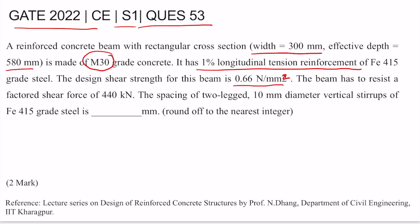This beam has to resist a factored shear force of 440 kN. The spacing of two-legged 10 mm diameter vertical stirrups of Fe415 grade steel is to be determined. We need to give the spacing in mm by rounding it off to the nearest integer. It's a 2 mark question.